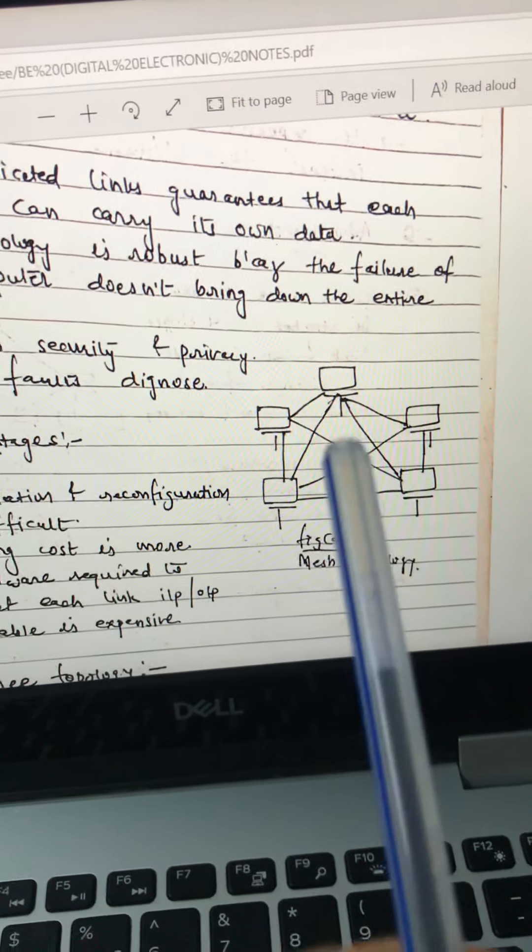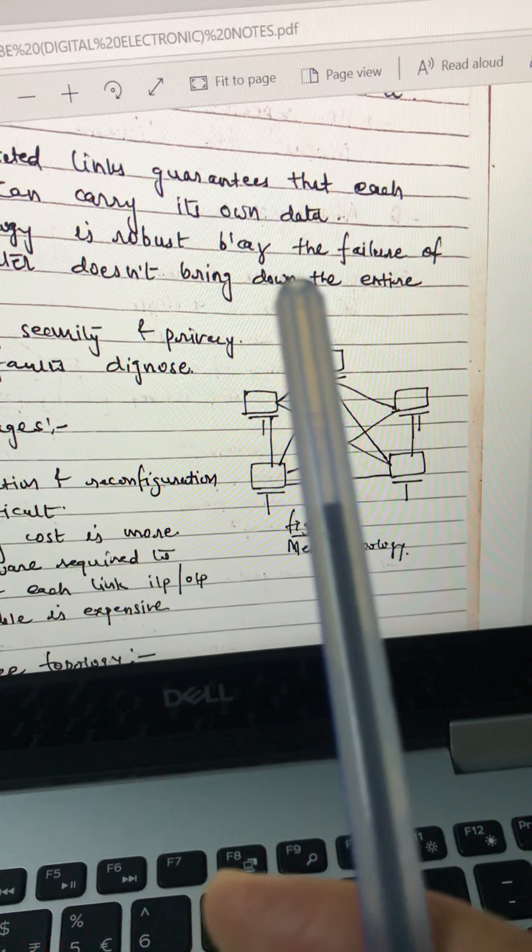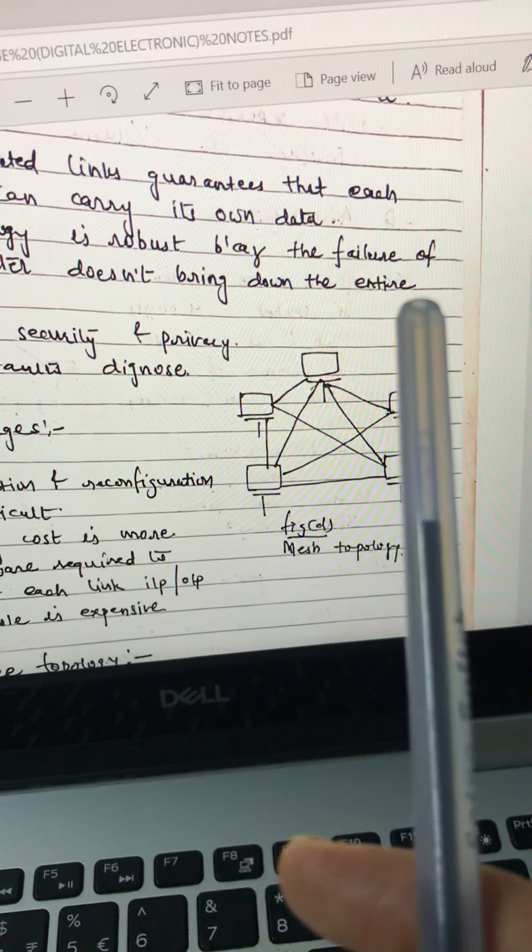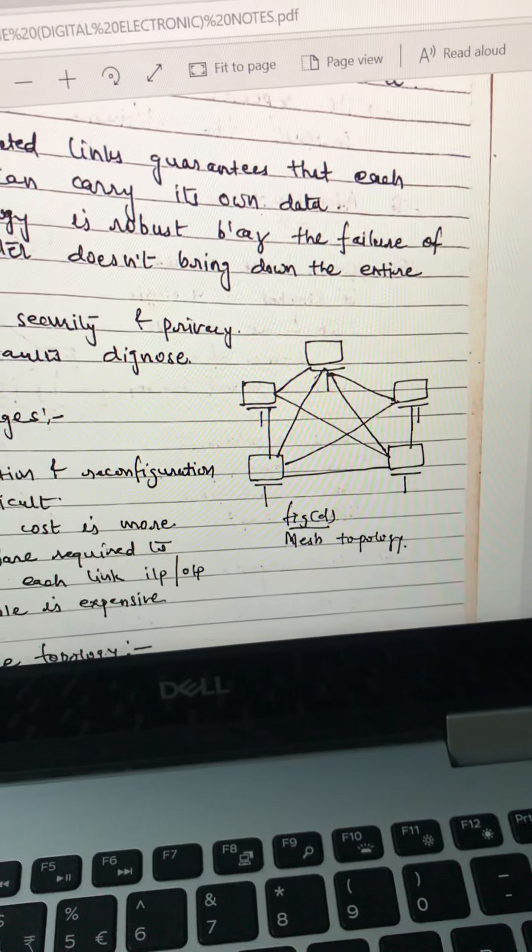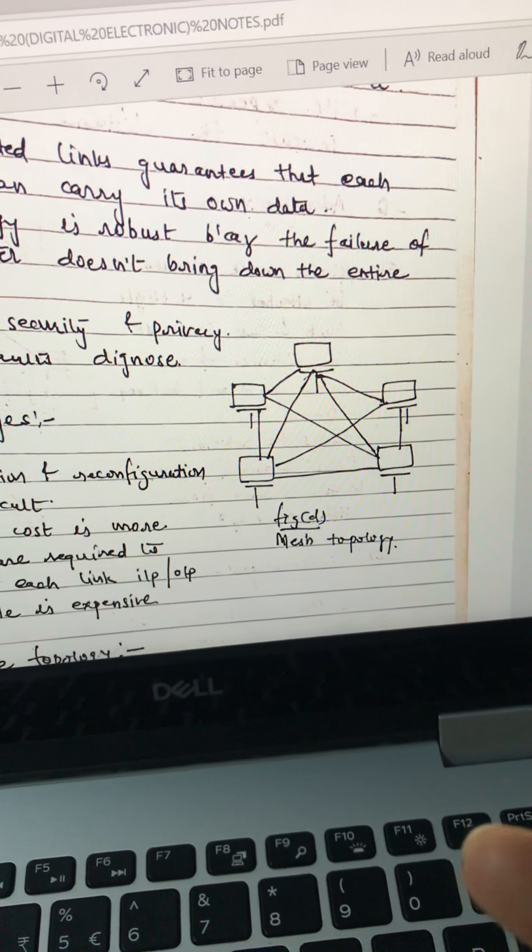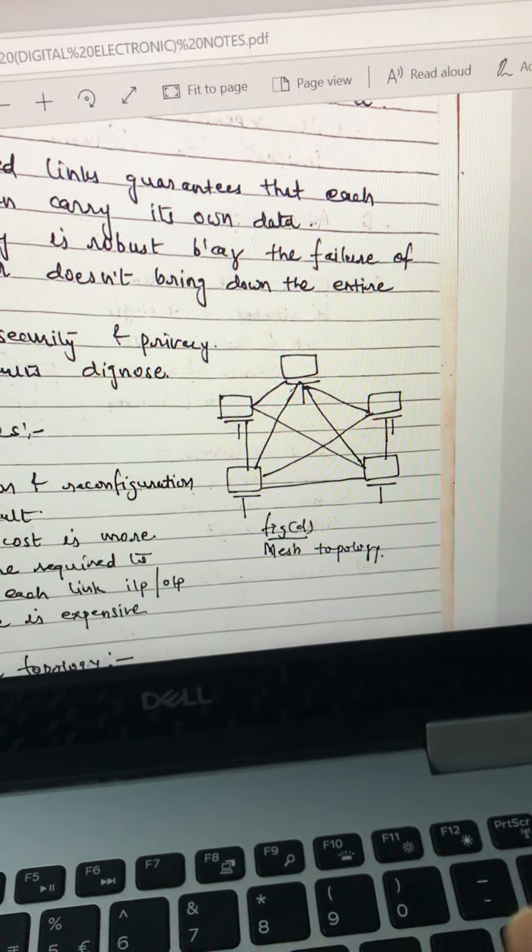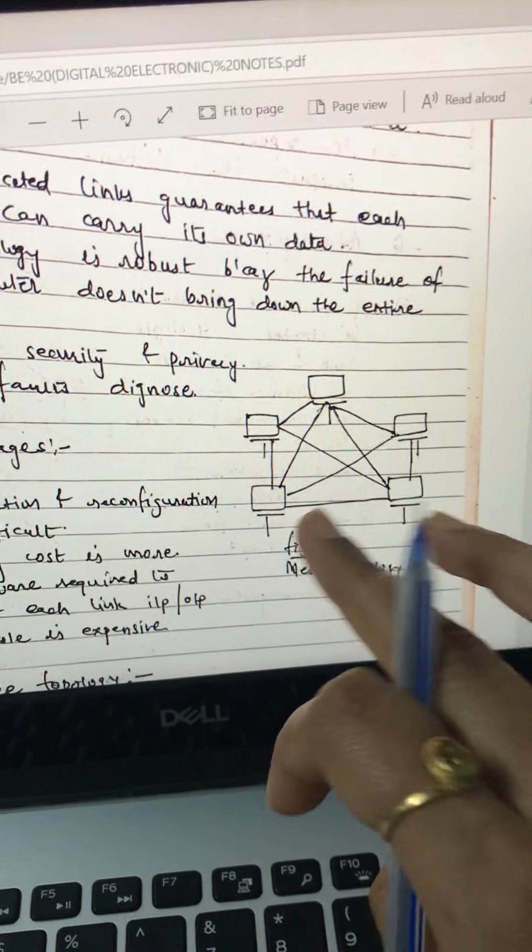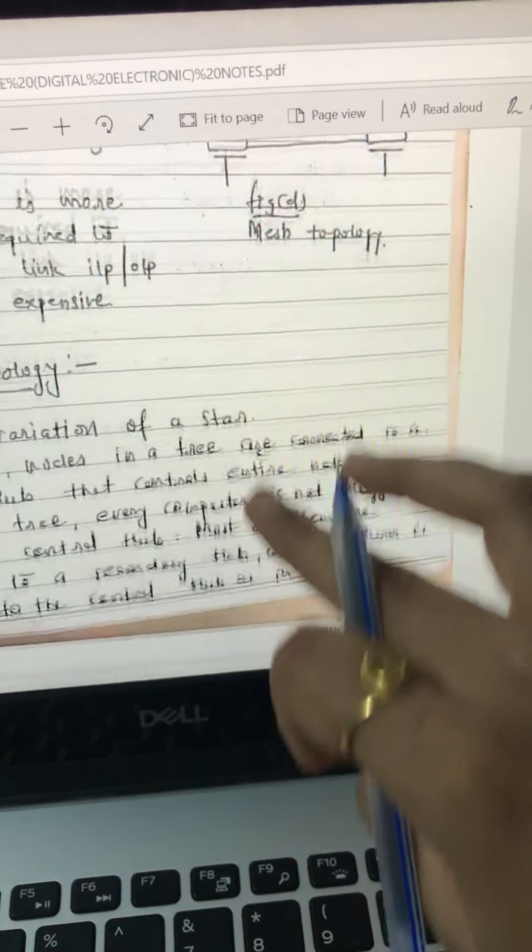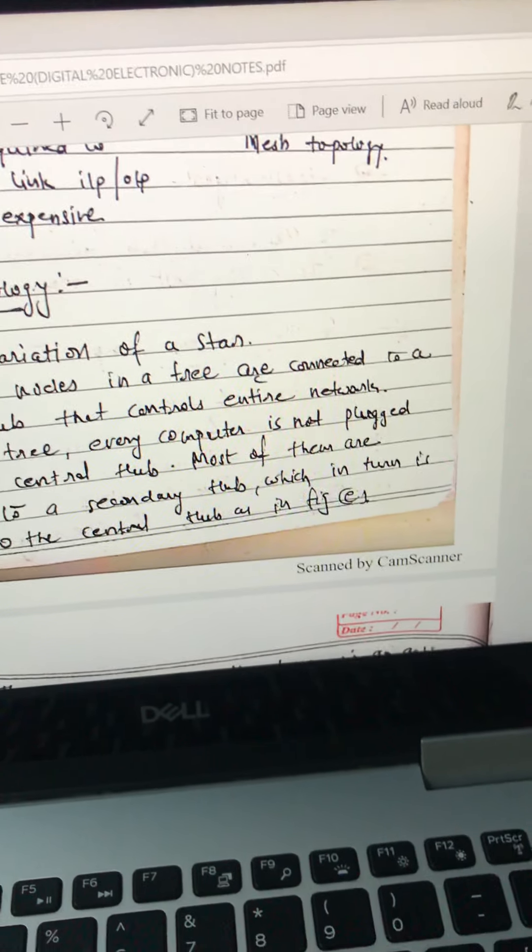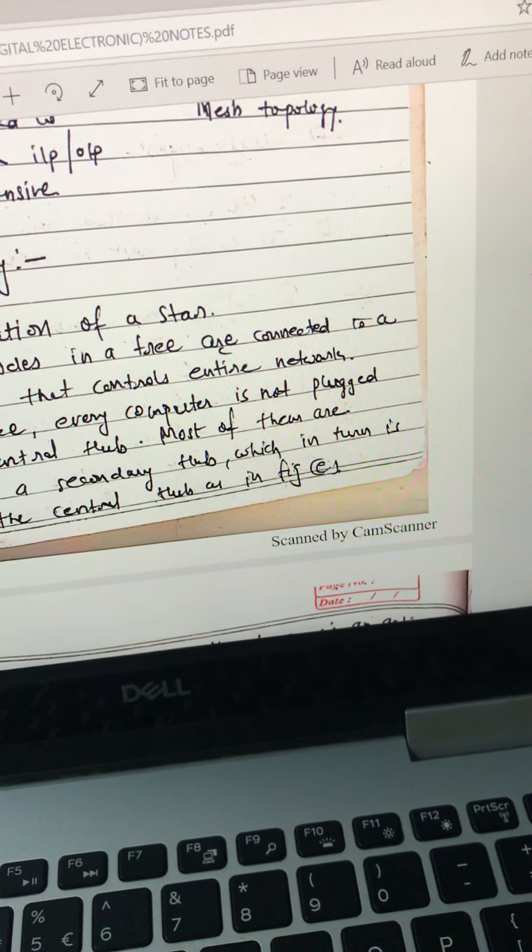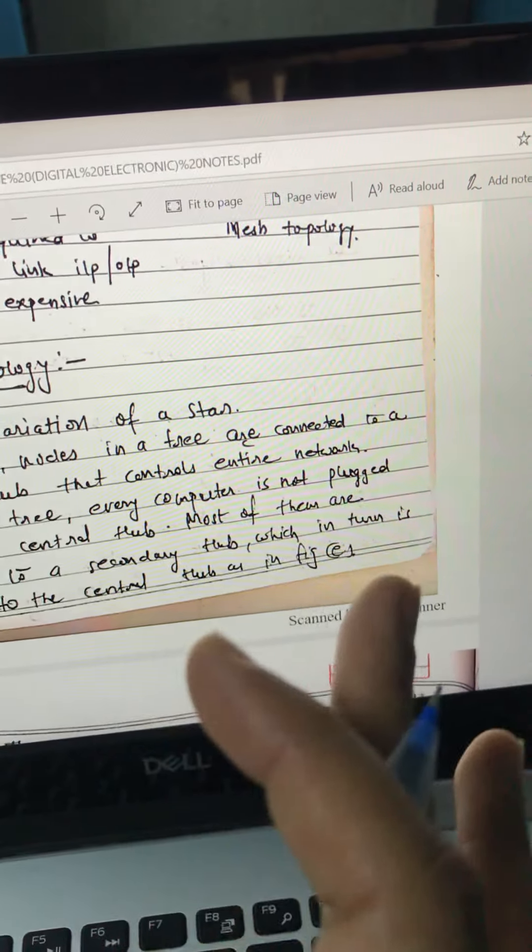But there are some advantages of it. The use of dedicated links guarantees that each connection can carry its own data. This topology is robust because the failure of one computer doesn't bring down the entire network. It provides security and privacy, easy fault diagnosis. So these are some advantages of mesh. So mesh is like 50-50. We can use it and we also cannot use it.